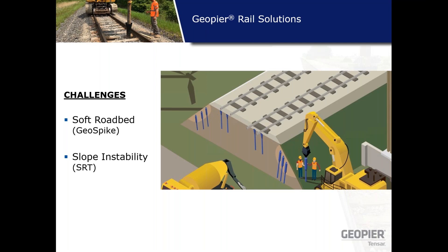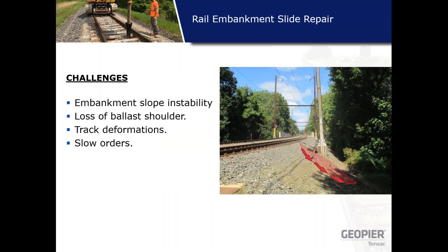We talked about soft roadbed repair with GeoSpike and will now transition to repairing slope instability issues with the GeoPeer slope reinforcement technology. This is a slightly different hazard that rail owners face — embankment slope instabilities for raised embankments. These can manifest as lost ballast shoulder, leading to track deformations that may even require subsequent GeoSpike subgrade reinforcing. All of these repairs are aimed at remedying slow orders, the main problem for Class One and short line rail owners.